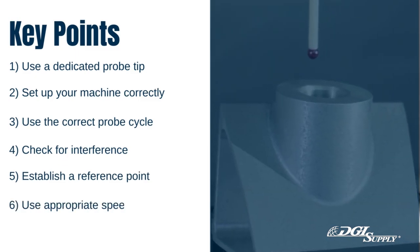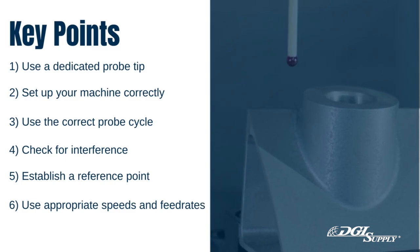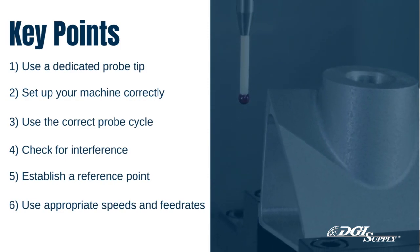Number 6: Use appropriate speeds and feed rates. The probe should move at a slow and controlled pace to ensure accurate readings. Make sure to use appropriate speeds and feed rates for the probe cycle.